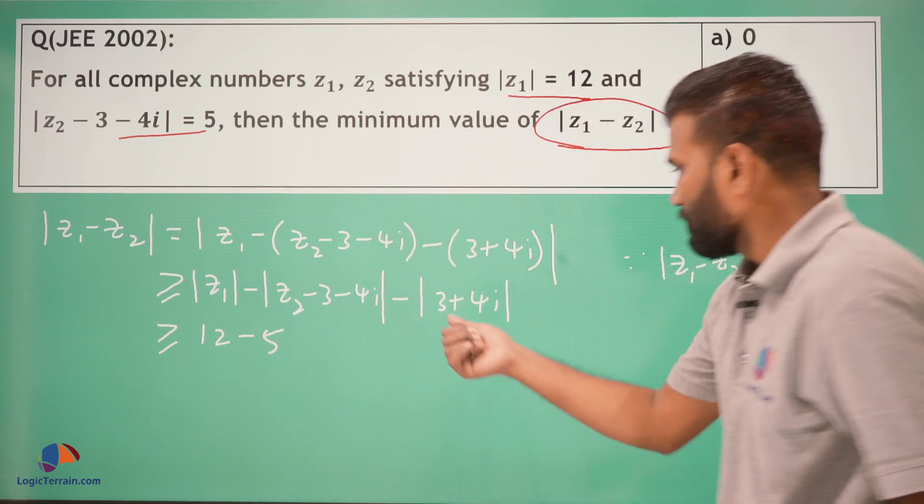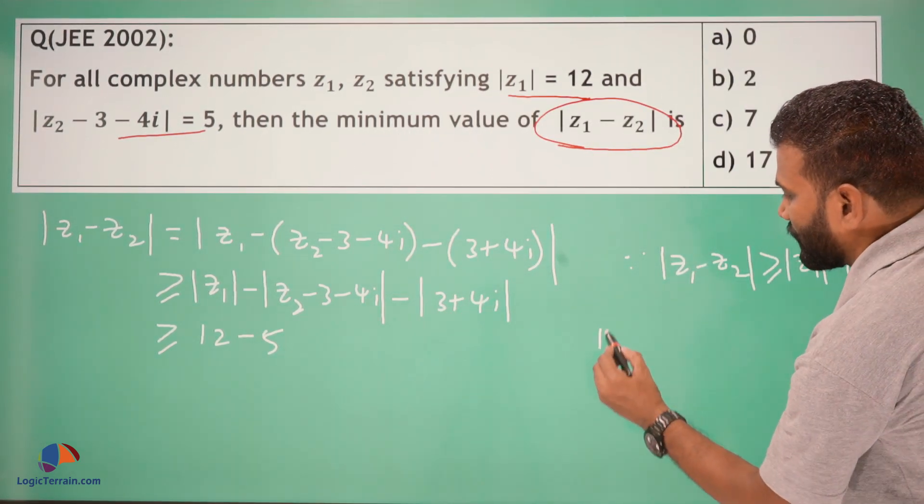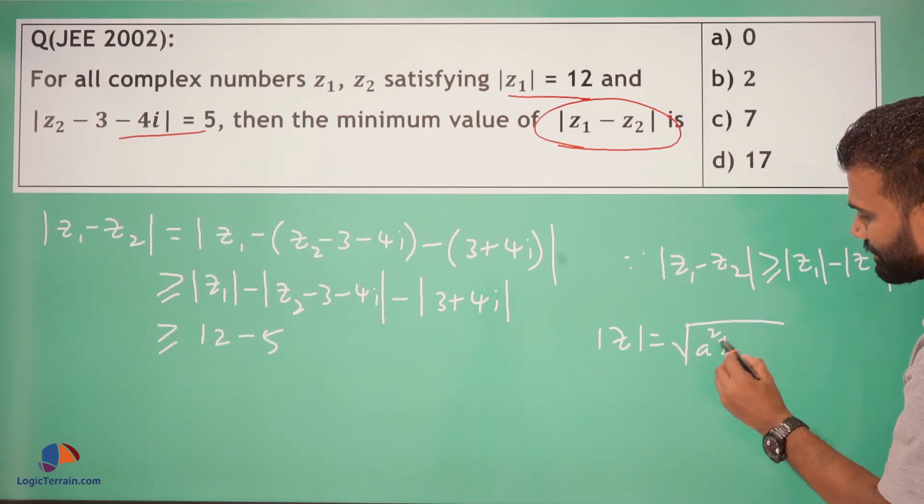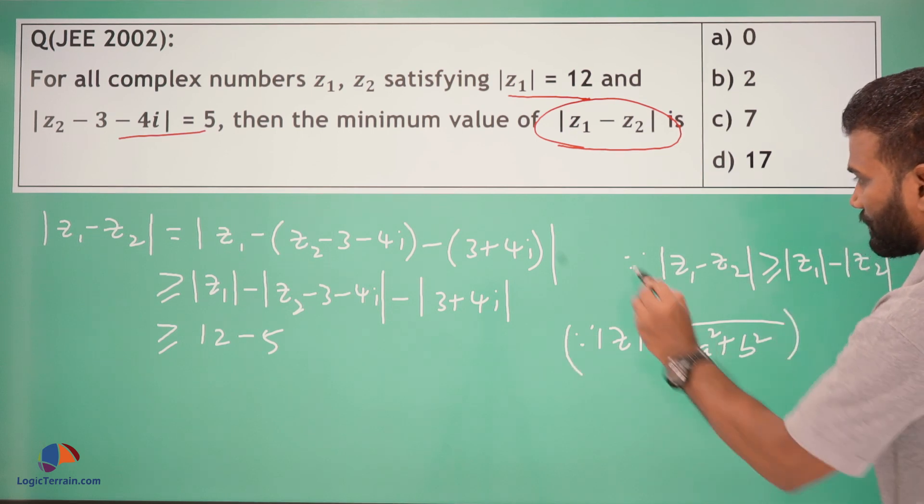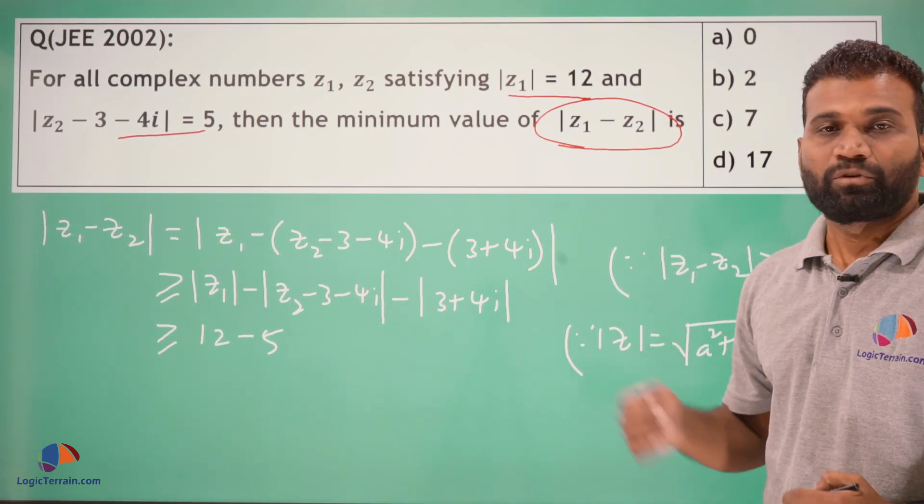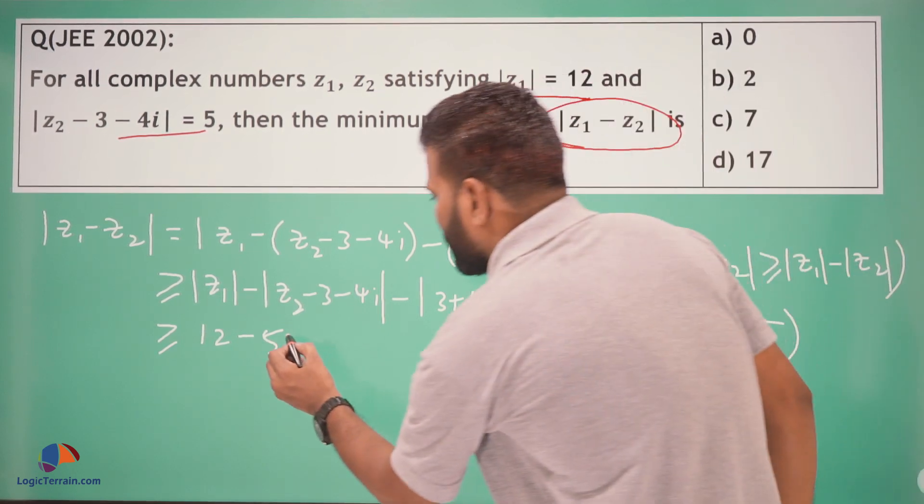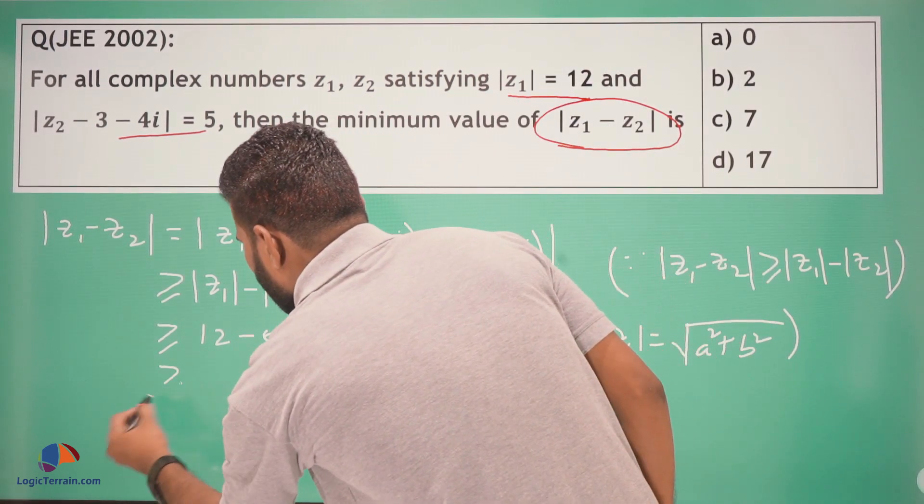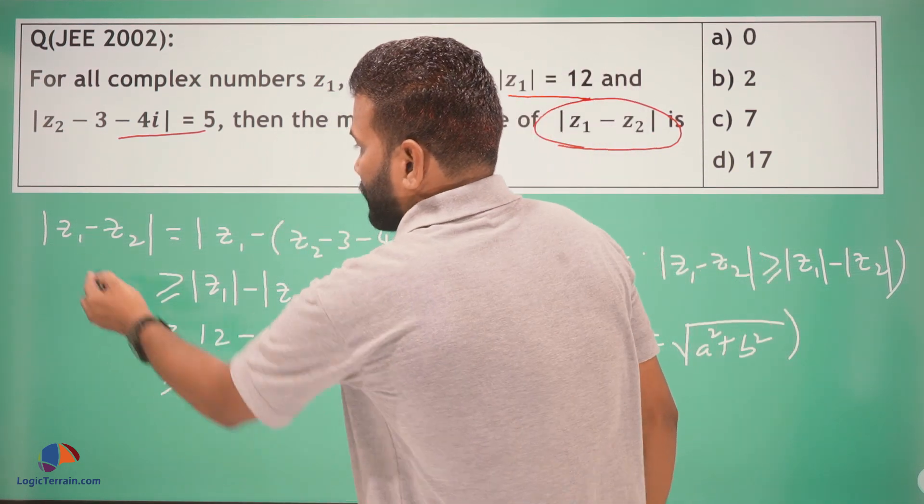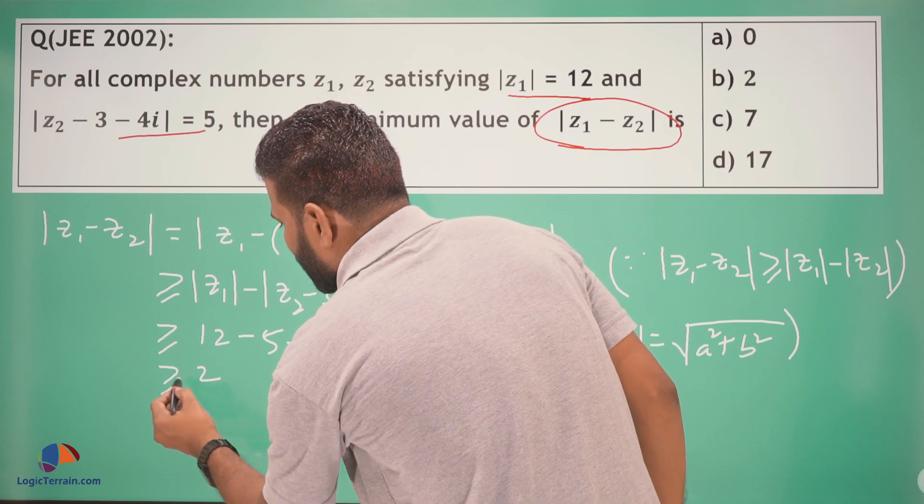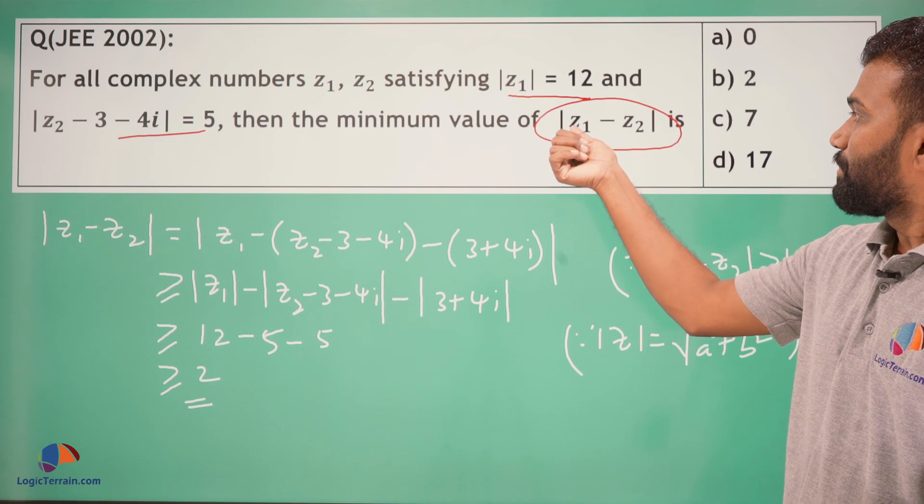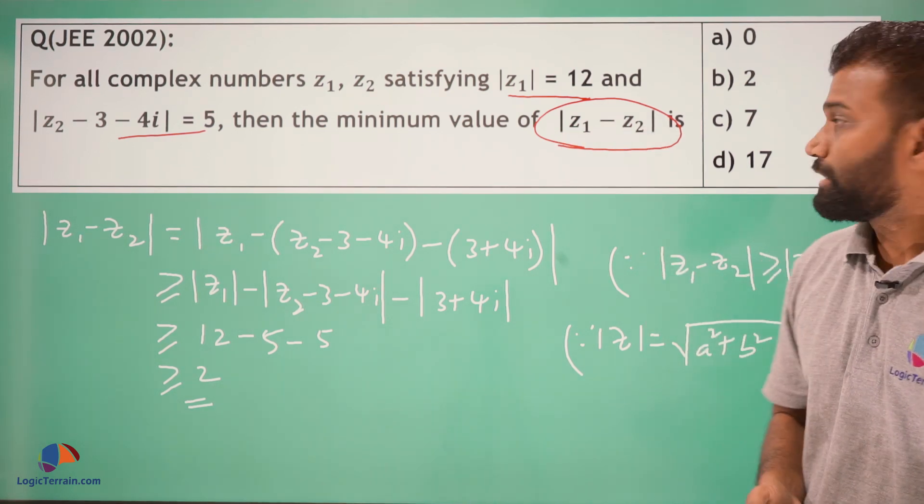And modulus of this complex number, modulus of Z is equal to square root of A squared plus B squared. By making use of this, 3 squared plus 4 squared, square root of 25 becomes 5. So minus 5, which is greater than or equal to 12 minus 10, that is 2. Therefore this value is greater than or equal to 2, which means the minimum value of modulus of Z1 minus Z2 is 2.